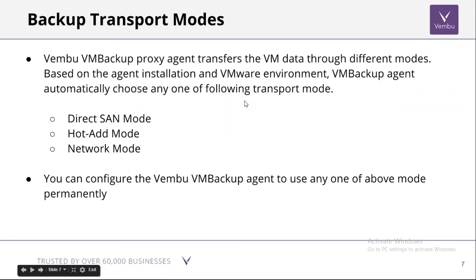Wambu VMware Backup and replication use various transport modes, depending on the agent installation and the type of VMware environment. The transport modes available are Direct SAN mode, Hot Add mode, and Network mode. The system will automatically choose the appropriate mode for data transfer, but you also have the option to manually configure the VM Backup Agent to use any one specific mode.